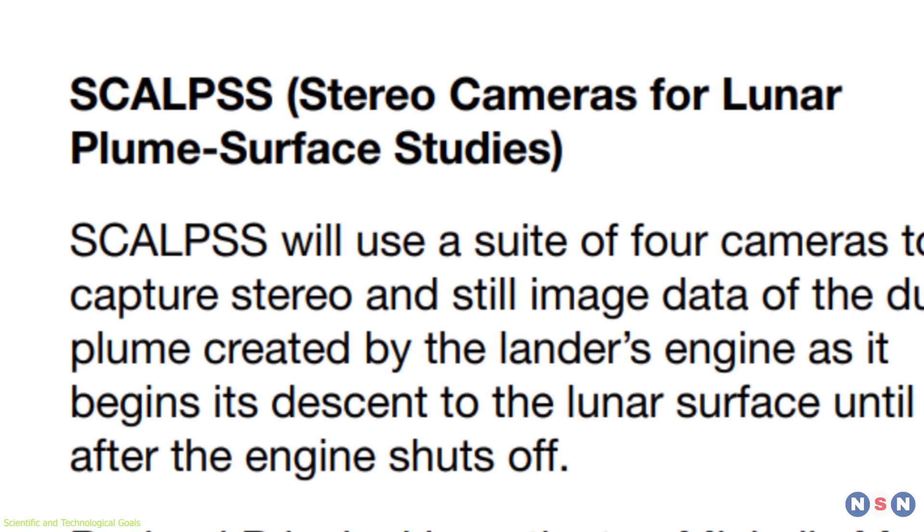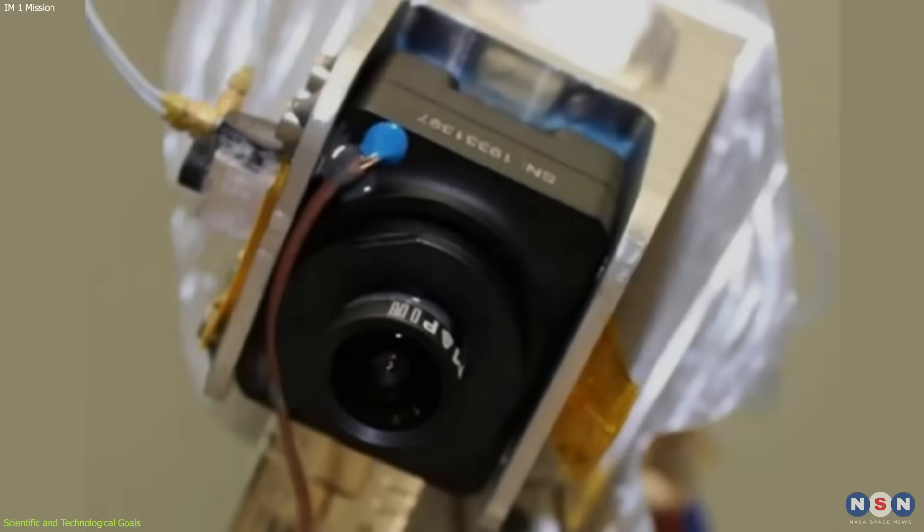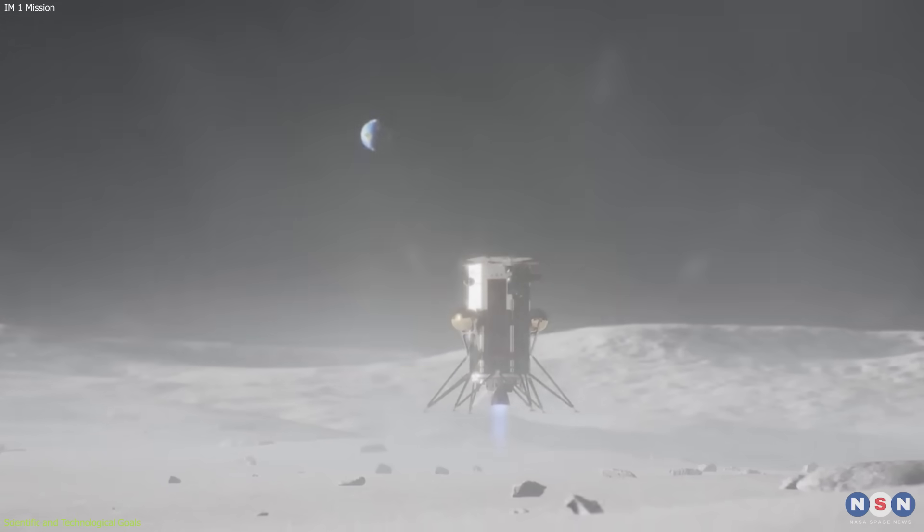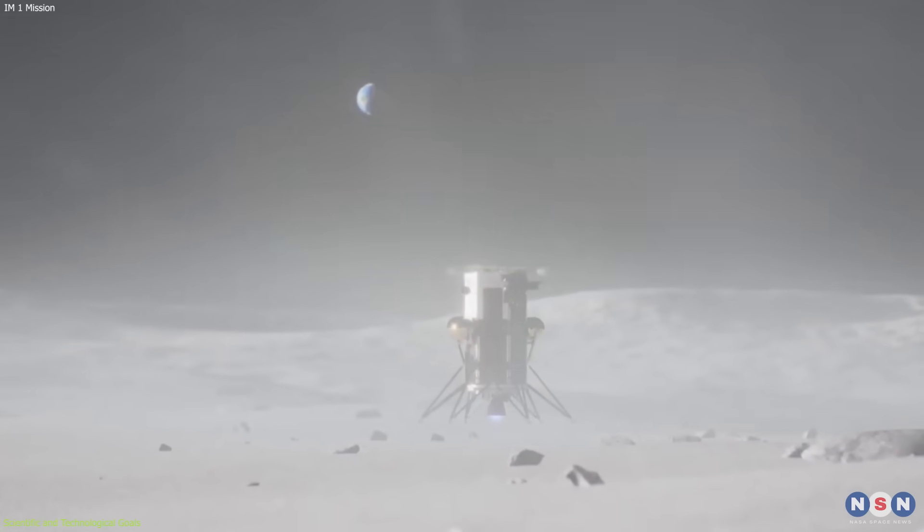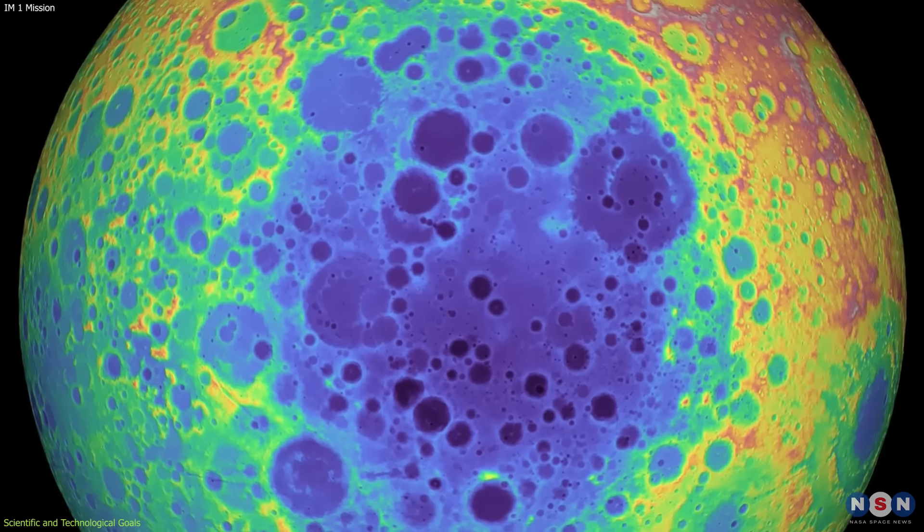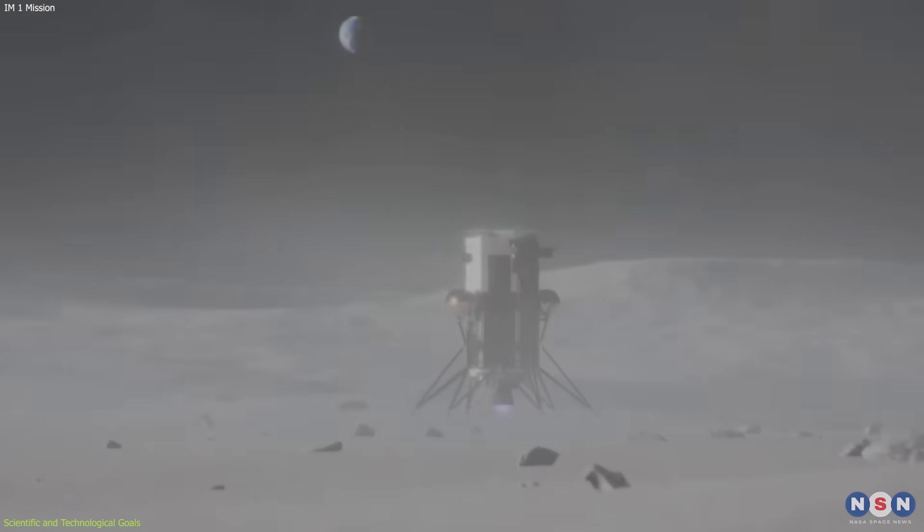The second one is SCALPSS, or Stereo Cameras for Lunar Plume Surface Studies, a pair of cameras that will capture high-resolution images and videos of the lander's plume effects on the surface, such as dust, erosion, and cratering. It will also monitor the thermal and optical properties of the surface before and after landing.